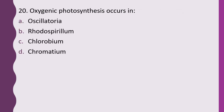Question 20. Oxygenic photosynthesis occurs in: Oscillatoria, Rhodospirillum, Chlorobium, or Chromatium. The correct answer is option A, Oscillatoria.